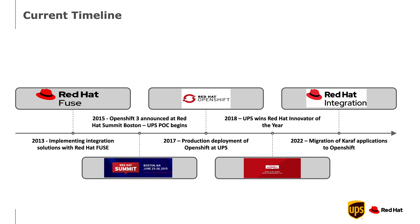Looking at our timeline: in 2013 was when we first implemented Red Hat Fuse at UPS. In 2015 we went to Red Hat Summit in Boston and OpenShift 3 was announced — we got our T-shirts and stickers and then went home and started a POC because we thought it was great. In 2017 we had our first deployment of OpenShift at UPS with two applications deployed, both of which were Fuse applications. In 2018 at the Red Hat Summit in San Francisco, we won the Red Hat Innovator of the Year Award. In 2022, Red Hat Fuse announced that the Karaf installations were getting end of life, so that's where we flow into Red Hat Integration and start migrating our Karaf applications to OpenShift.